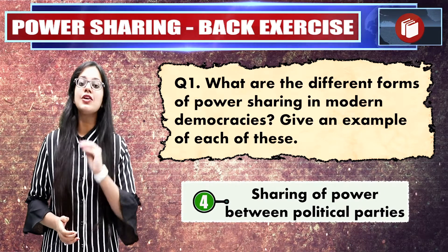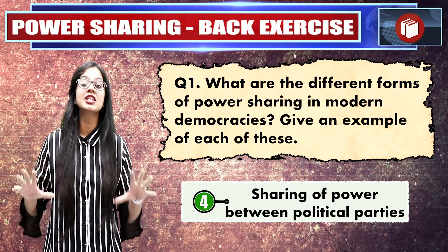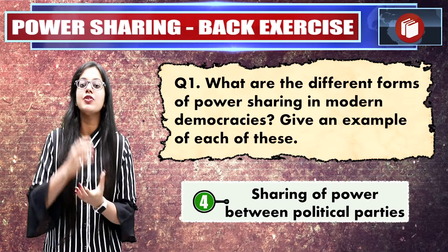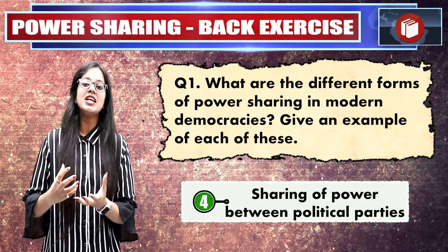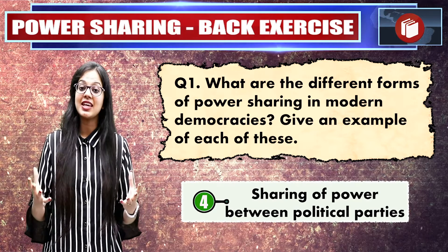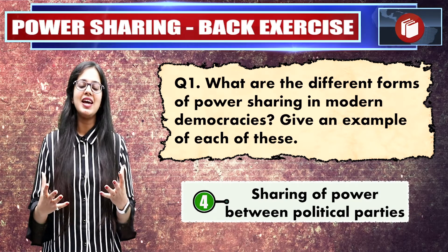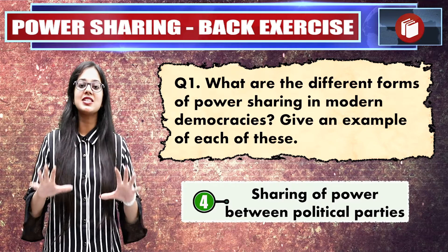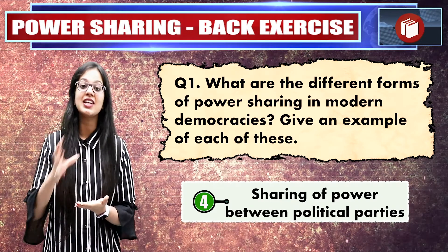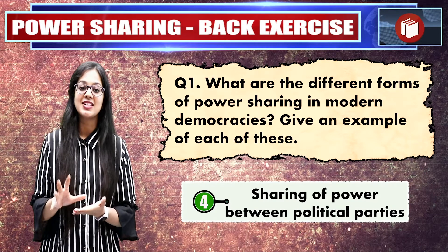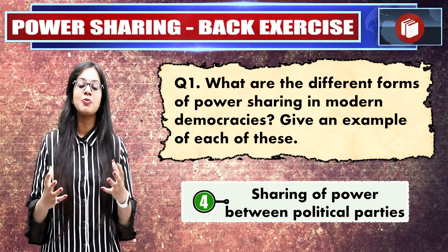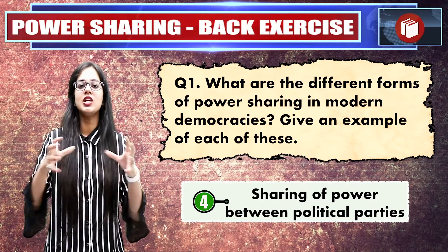The last form of power sharing is that different political parties, pressure groups, or movements share and participate in power. In a democracy, since the majority wins, there is tough competition among political parties in elections. There are situations where different political parties form an alliance and create a coalition government — this is what we call the sharing of power among different political parties.